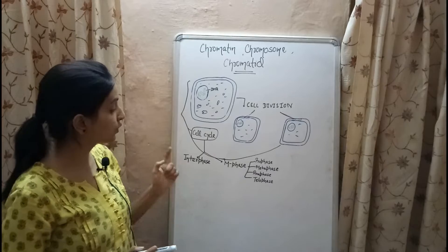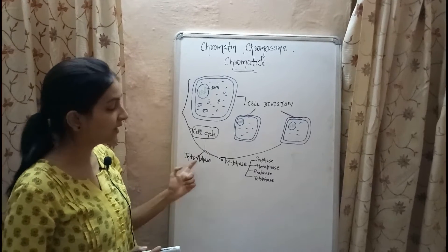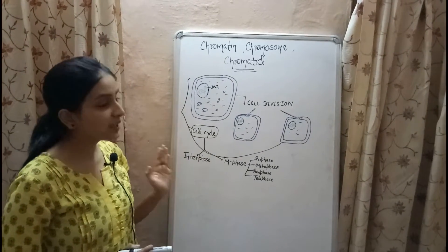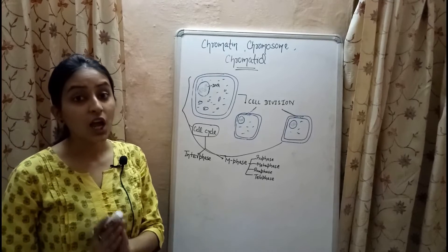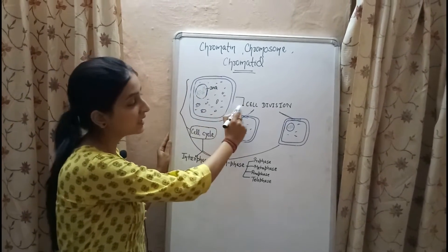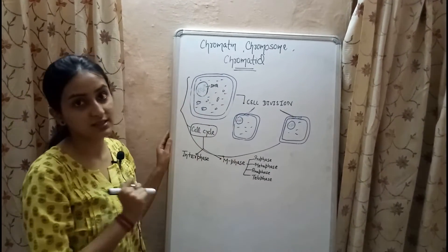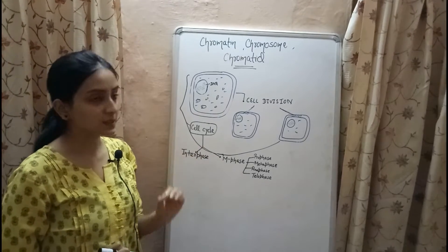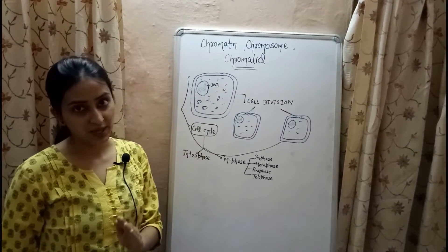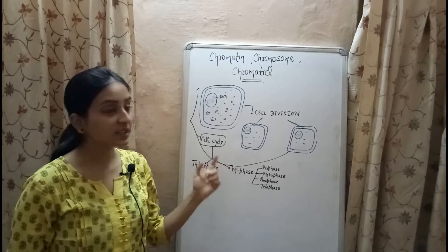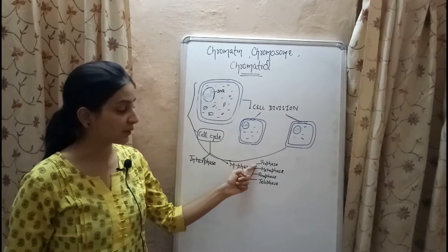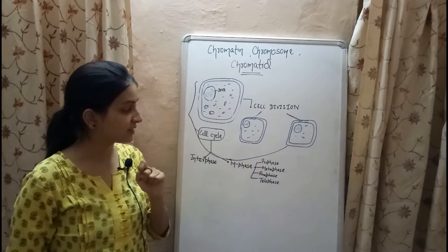The cell cycle consists of two phases: interphase and M phase. Interphase is the phase during which the cell prepares itself for cell division, while M phase is when actual cell division takes place. M phase consists of four sub-phases: prophase, metaphase, anaphase, and telophase.